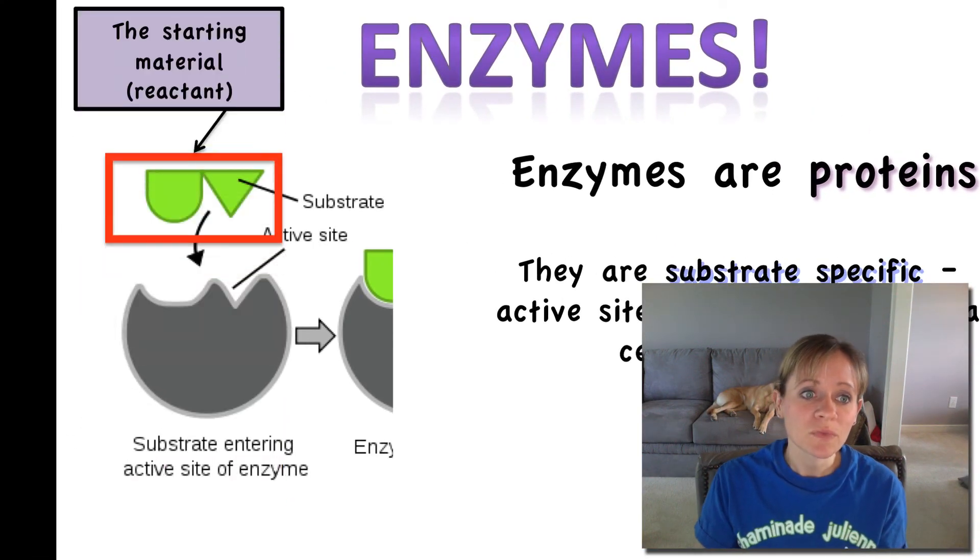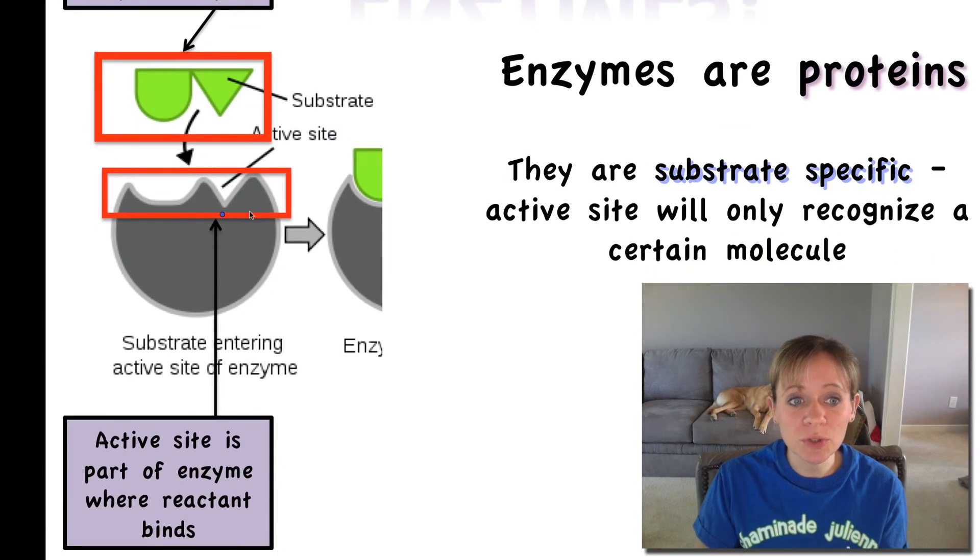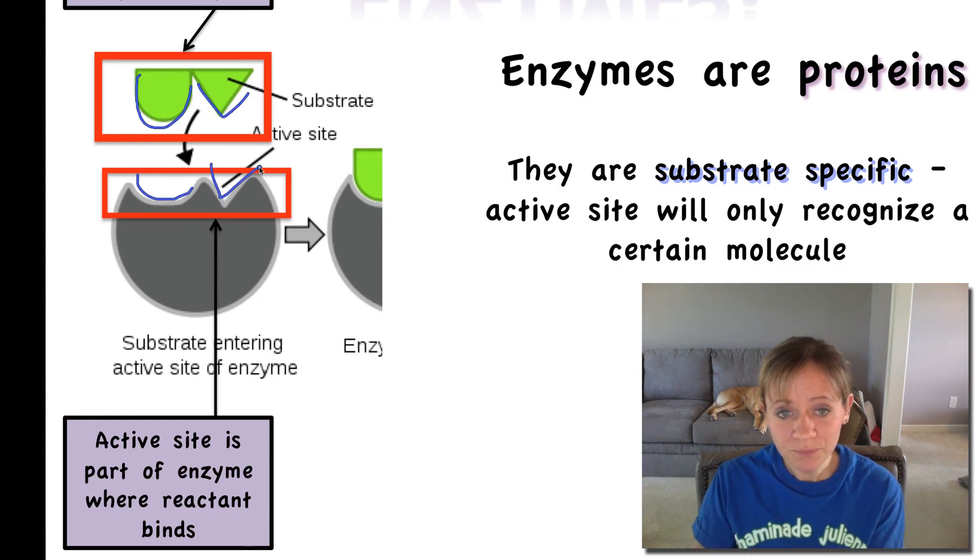Well, let's take a look over here at this picture. So the substrate is in green. This is just simply the molecule or the reactant that the enzyme is going to work on. And then the active site is just simply the portion of the enzyme where the substrate or that reactant binds. And notice that it's specific. It's shape specific. So this part will fit in here and this part fits in here. So they are substrate specific for the shape of the active site.